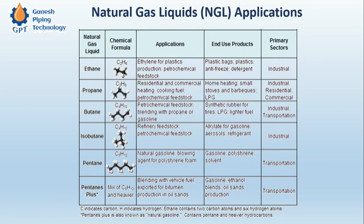Butane is a petroleum feedstock and, apart from being an LPG fuel component, it is also used in the production of synthetic rubber for tires. Then comes isobutane, which is an integral component of all aerosols — the deodorants and sprays we use. Then comes pentane, which is basically used as a blending agent or solvent for gasoline. In petrol there are a number of other solvents mixed with it, and pentane is one of them.